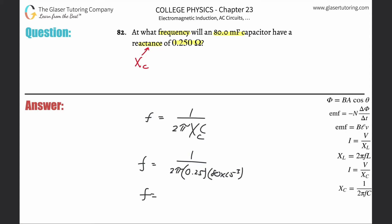So now 1 divided by 2π times 0.25 times 80 times 10 to the minus 3. And that gives us 7.96 hertz, that's how many cycles there are per second.